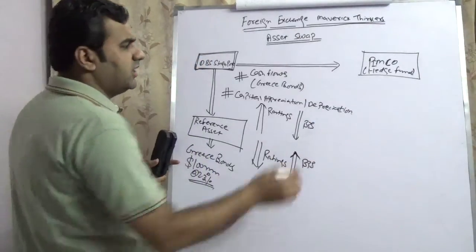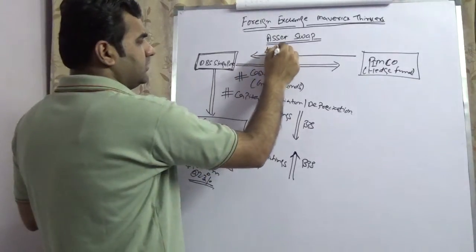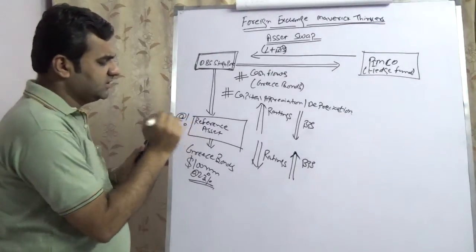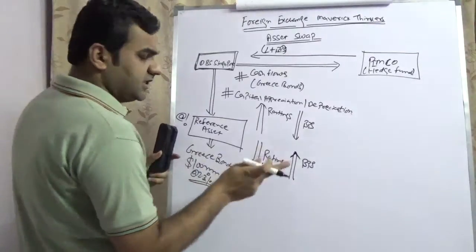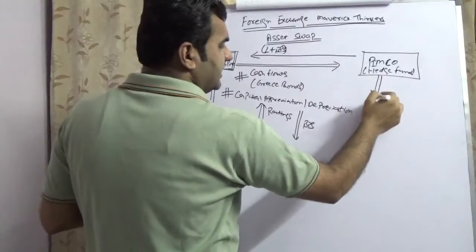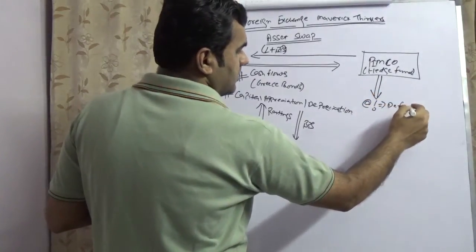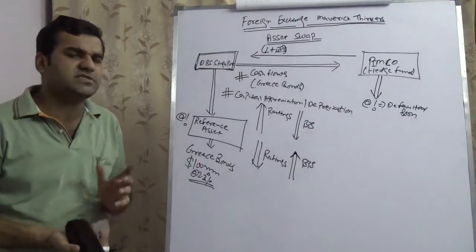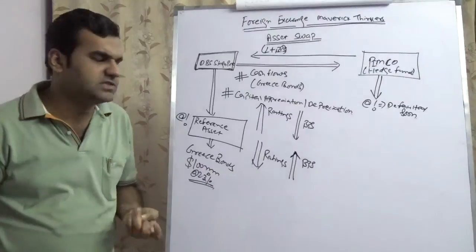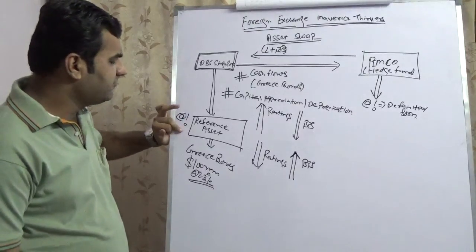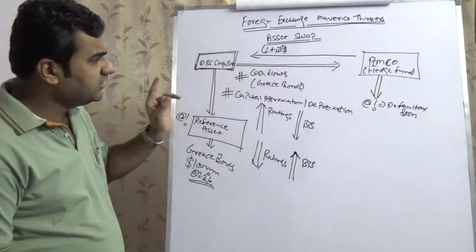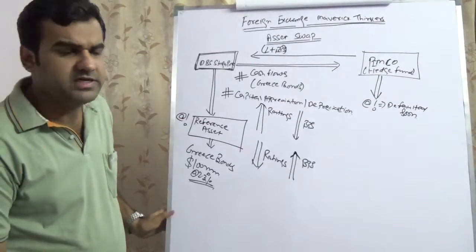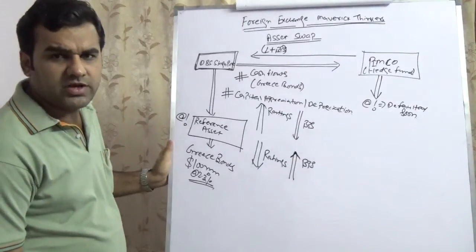PIMCO would like to transfer LIBOR plus a few basis points to DBS Singapore every year. I would refer to this with a hash. The ownership of this particular reference asset is not going to change, but PIMCO knows that this asset is going to get defaulted soon. Even if there is a default happening in the reference asset, PIMCO would continue to pay LIBOR plus a few basis points without getting any cash flows from DBS Singapore, because DBS Singapore can clearly say the reference asset I was having is already defaulted, so I cannot pay anything to you.